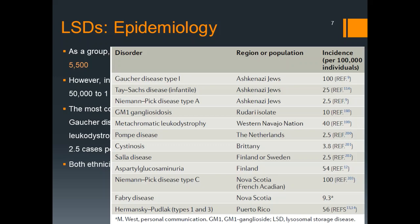The most common lysosomal storage disorders are Fabry's disease, Gaucher's disease, metachromatic leukodystrophy, and Pompe's disease. Both ethnicity and geography play a very important part in the epidemiology. Lysosomal storage disorders are relatively more common in Ashkenazi Jews and other subpopulations, so it is very important to elicit ethnicity and geography in the history whenever a patient presents.